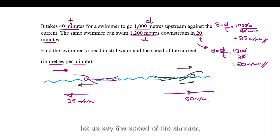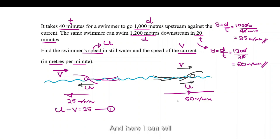Now, let's say the speed of the swimmer. Let's call it U. So, that's U. That's U. And the speed of the current. Let's call it V. The speed of the current. So, that's V. And that's V. Now, obviously, you can see here U take away V is 25. And here I can tell because these two added up to give you 60 because the current now helps the swimmer. So, U add V is equal to 60.